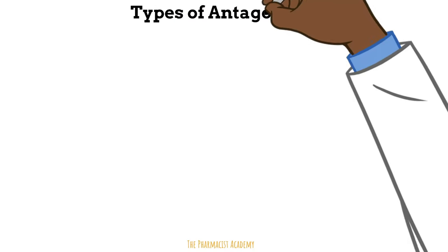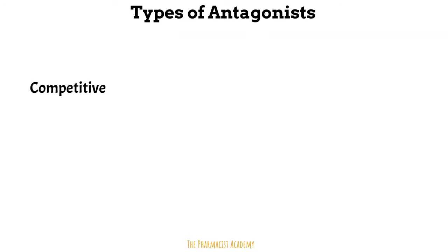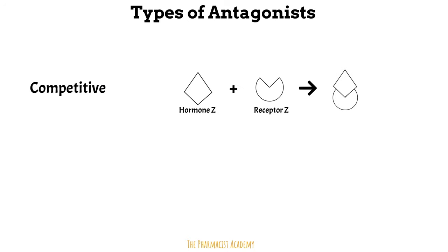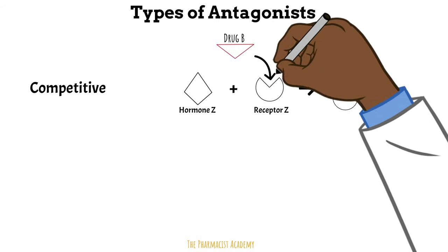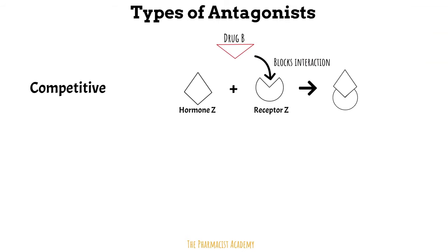For antagonists, the first type is the competitive antagonist. Normally, something in the body binds to a receptor, forms a complex, and a response occurs. Then the antagonist comes in and blocks this interaction. In competitive antagonism, as the name implies, it's a competition between hormone Z and Drug B for the same receptor. Even though it's a competition, if you increase the concentration of the drug, it will win and bind to the site instead of hormone Z.